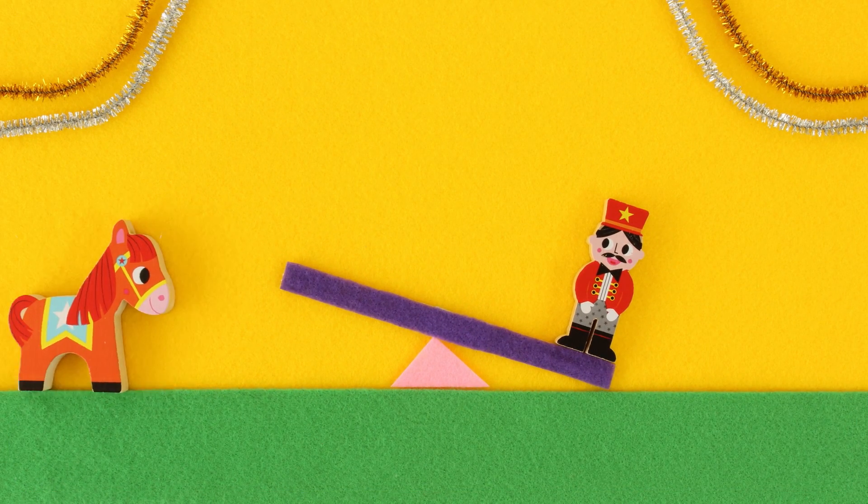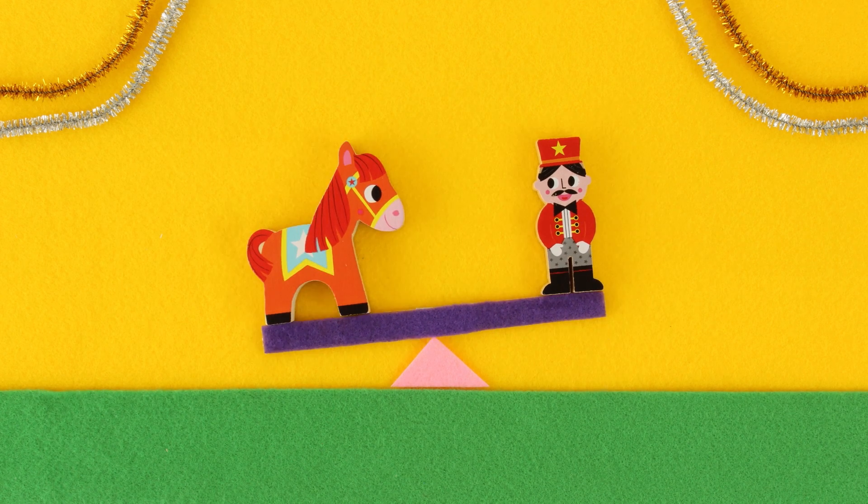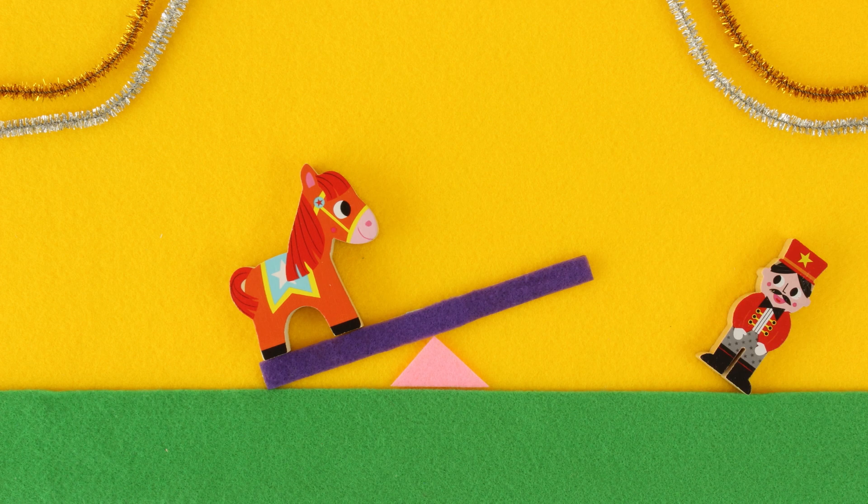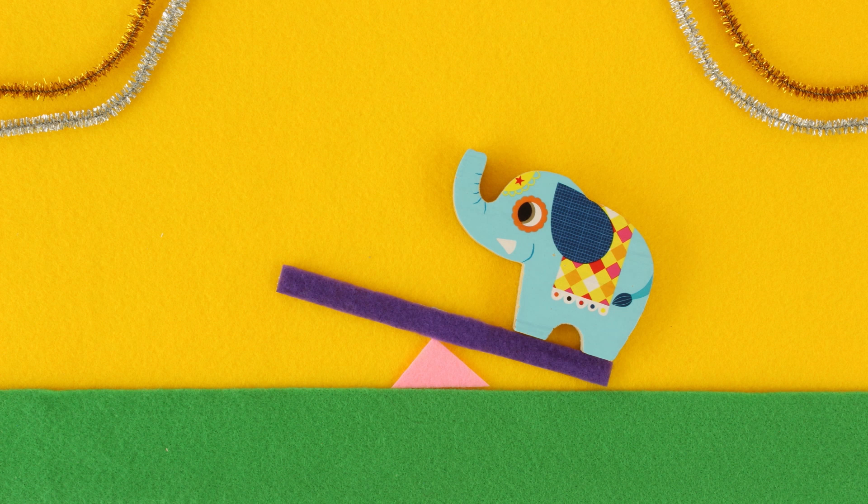There was a seesaw with the ringleader on it. When a horse jumped on one side, the seesaw would lean towards the horse, which means the horse is heavier than the person and the elephant is much heavier than the horse.